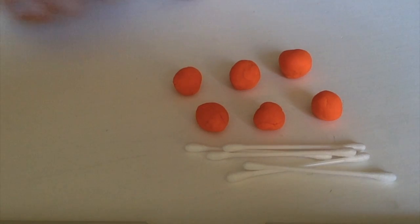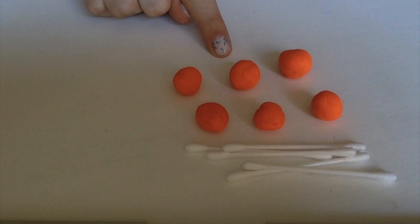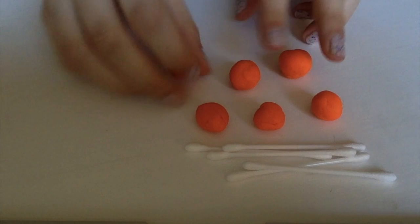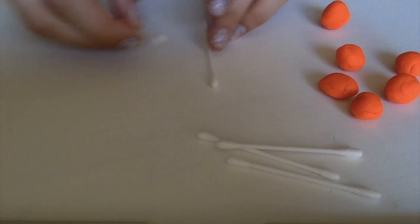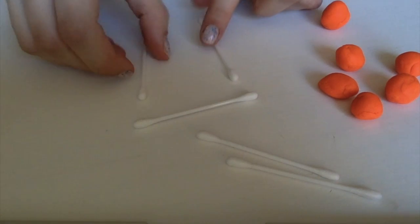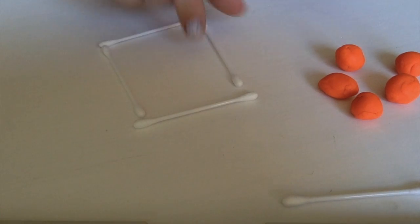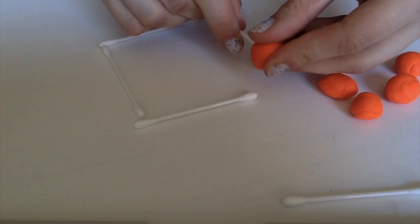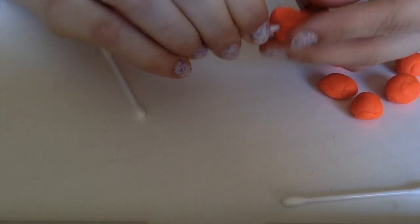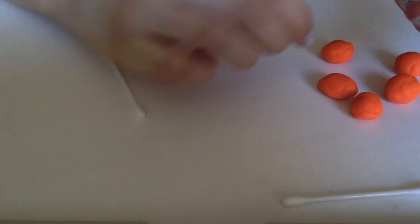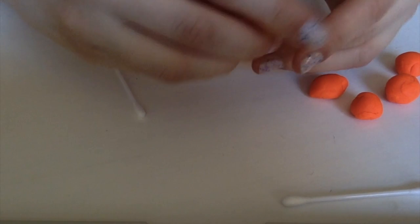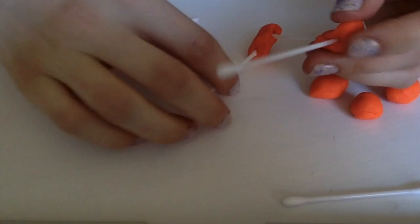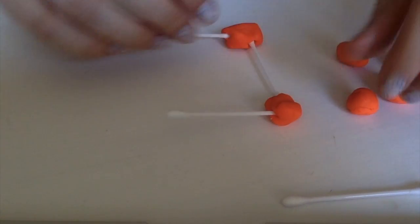Now when I'm making my rectangular prism, sorry, the base of my prism is a rectangle. So I'm gonna use my q-tips to make a rectangle and I'm gonna use my play-doh to hold them together. Now you might not be using play-doh. You might be using something else and that's fine. Whatever you can use that sticks them together will work just fine. But make sure that you ask permission before you start grabbing stuff from your cupboards.